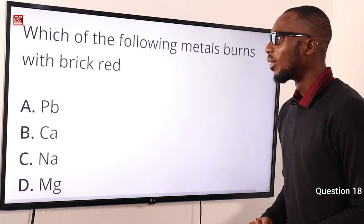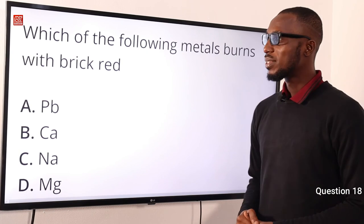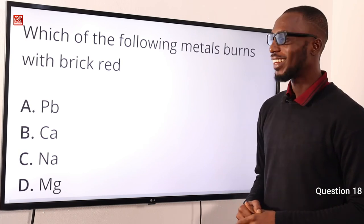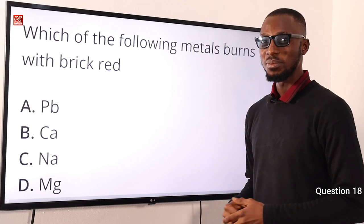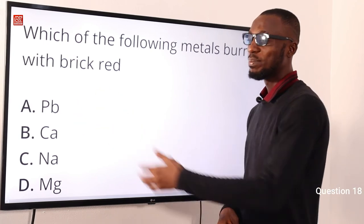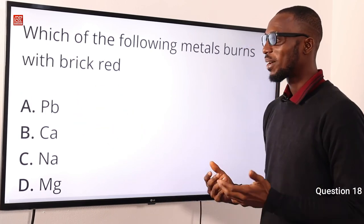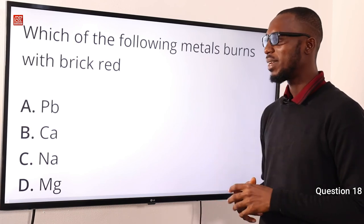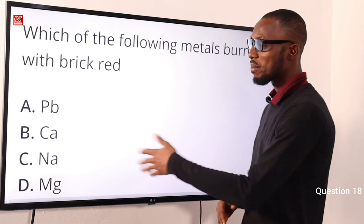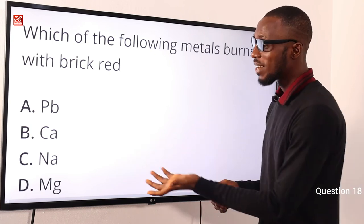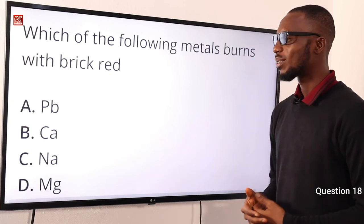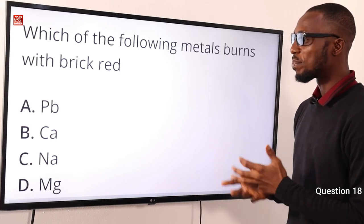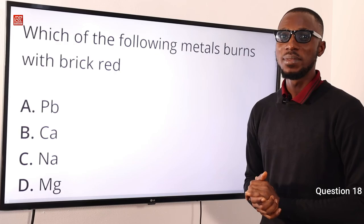Number 18. Which of the following metals burns with a brick red color? That metal is calcium. Lead shows a livid blue color in the flame test, sodium gives yellow, and magnesium gives bright white. The correct option is option B — calcium burns with brick red during the flame test.